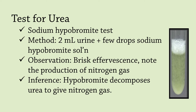Among the organic nitrogenous constituents, the main one is urea. When urea is treated with sodium hypobromite, it decomposes to give nitrogen. This is also called the sodium hypobromite test. To do this, in 2 ml of urine sample, add a few drops of sodium hypobromite solution. Note the brisk effervescence and the production of nitrogen gas.